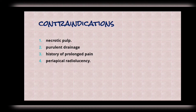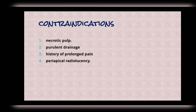Contraindications include necrotic pulp, purulent drainage, history of prolonged pain, and periapical radiolucency. In all such cases, apexogenesis is not the treatment option.